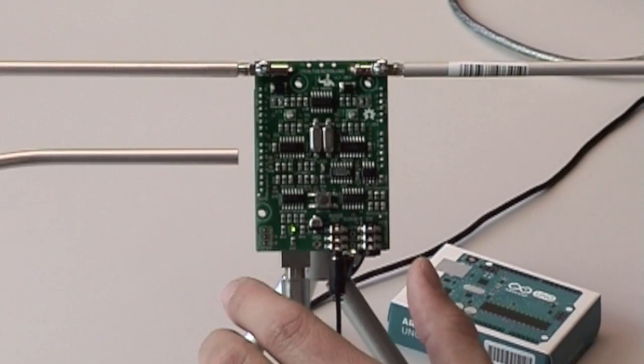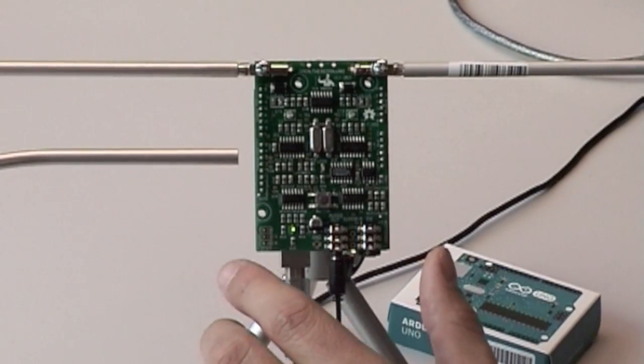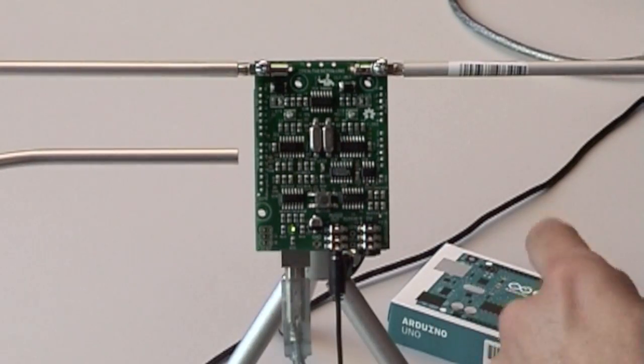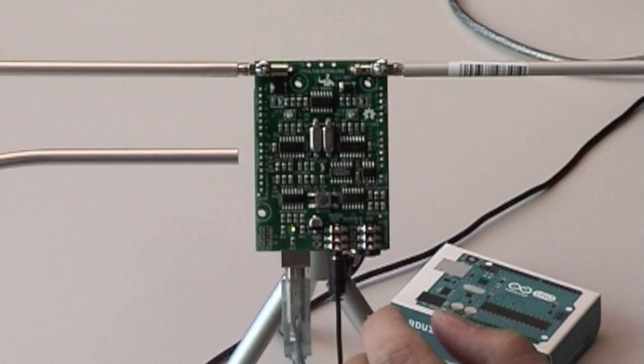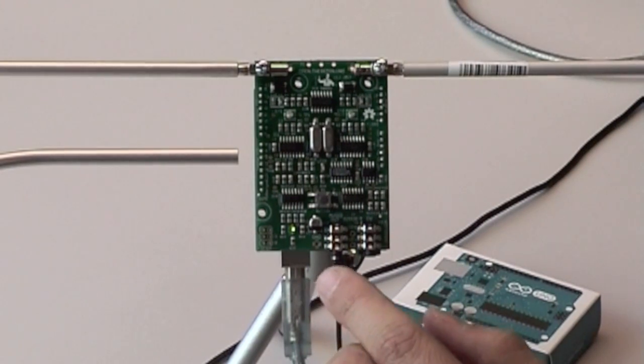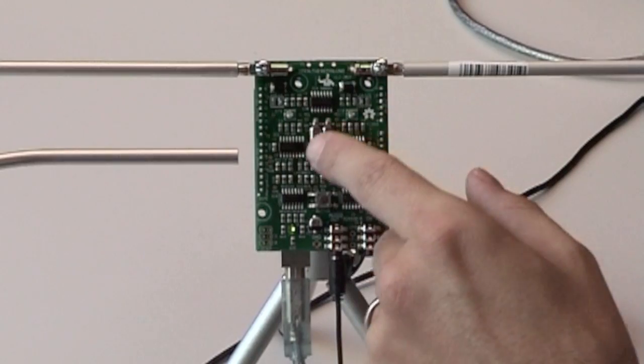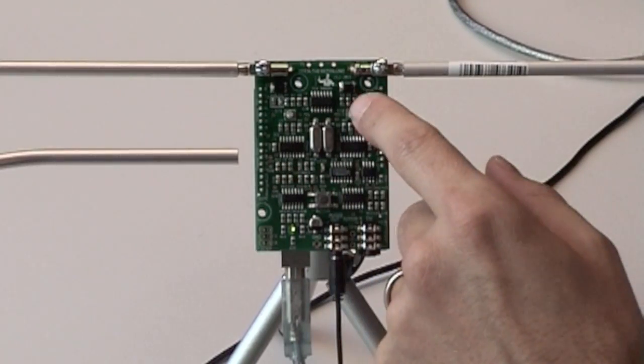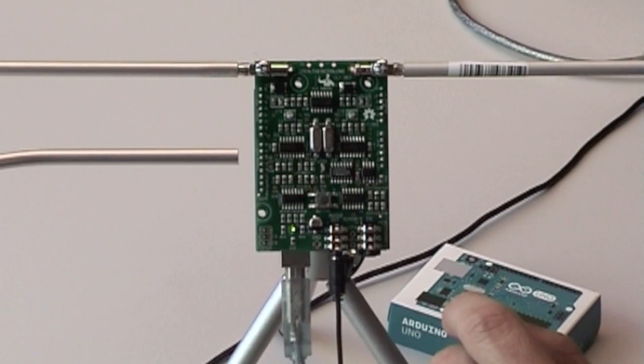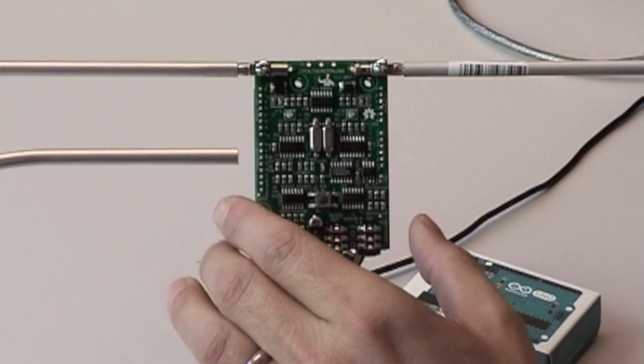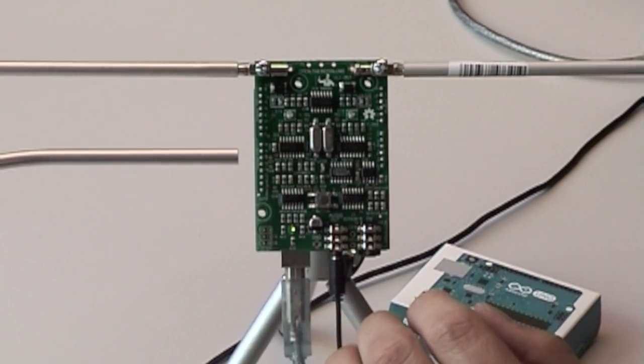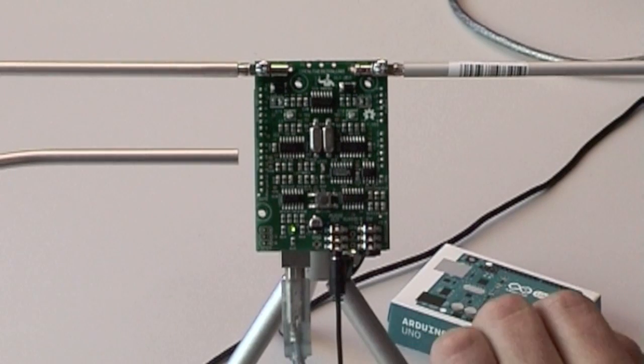The open theramine UNO is designed as a shield for the Arduino UNO. While the microcontroller does advanced filtering and calibration, the electronic shield is built around two heterodyne oscillators like the original theramine. As you can see the circuit requires quite some components.